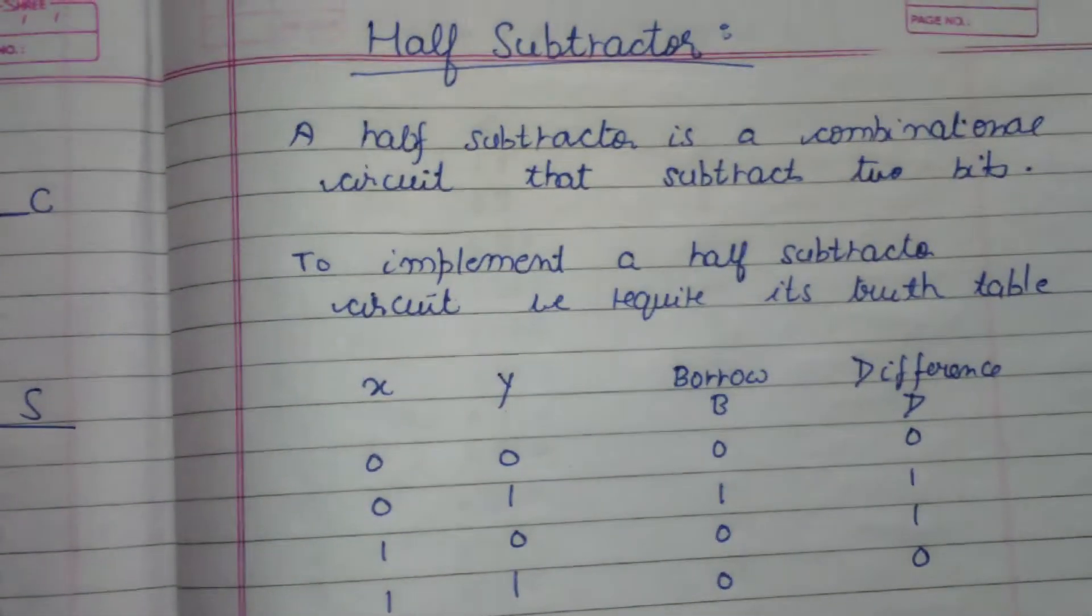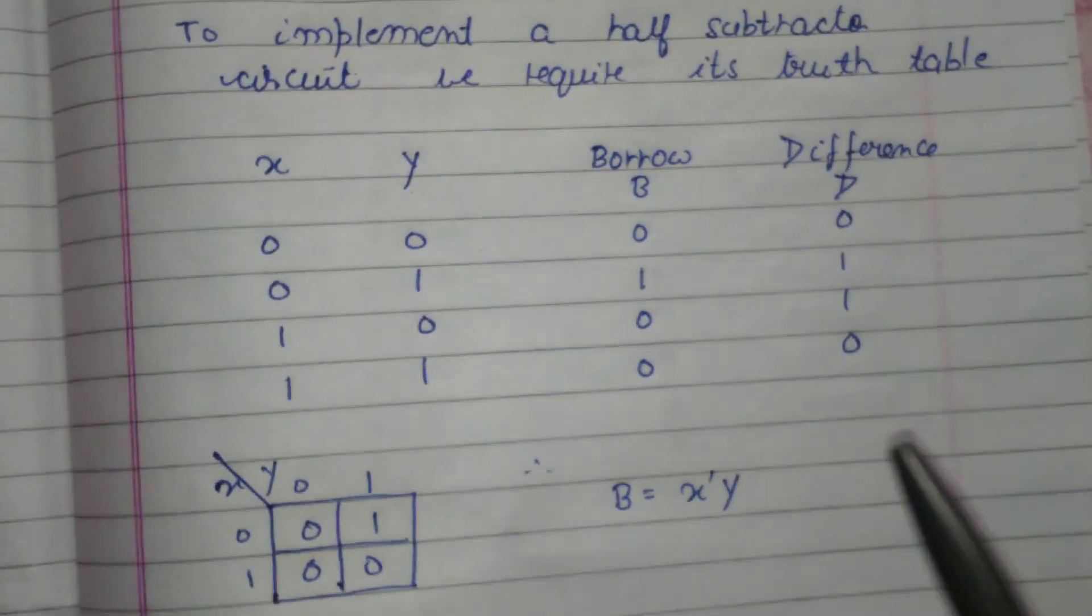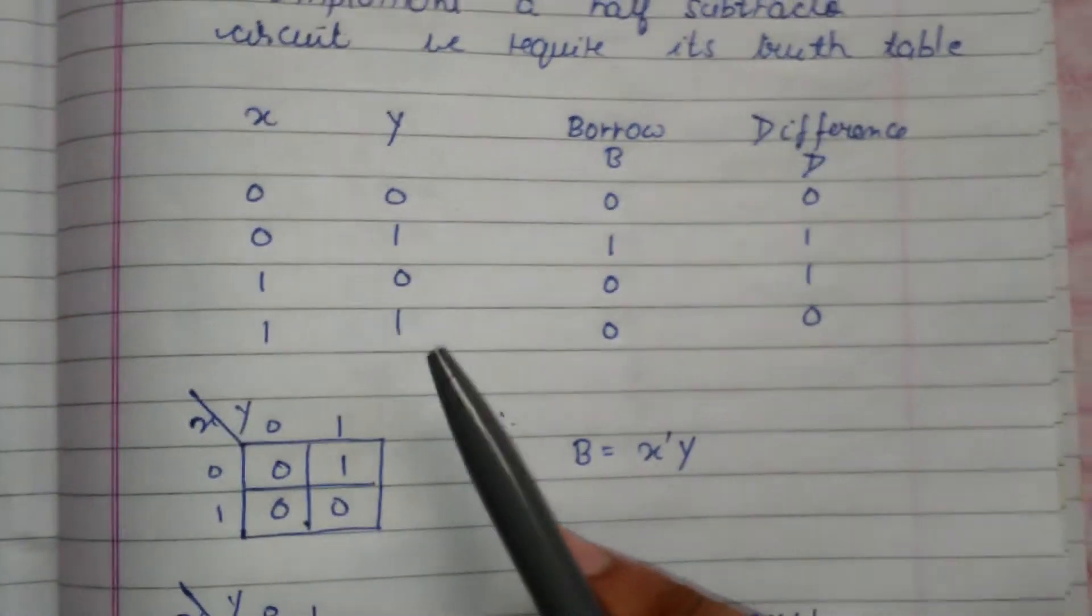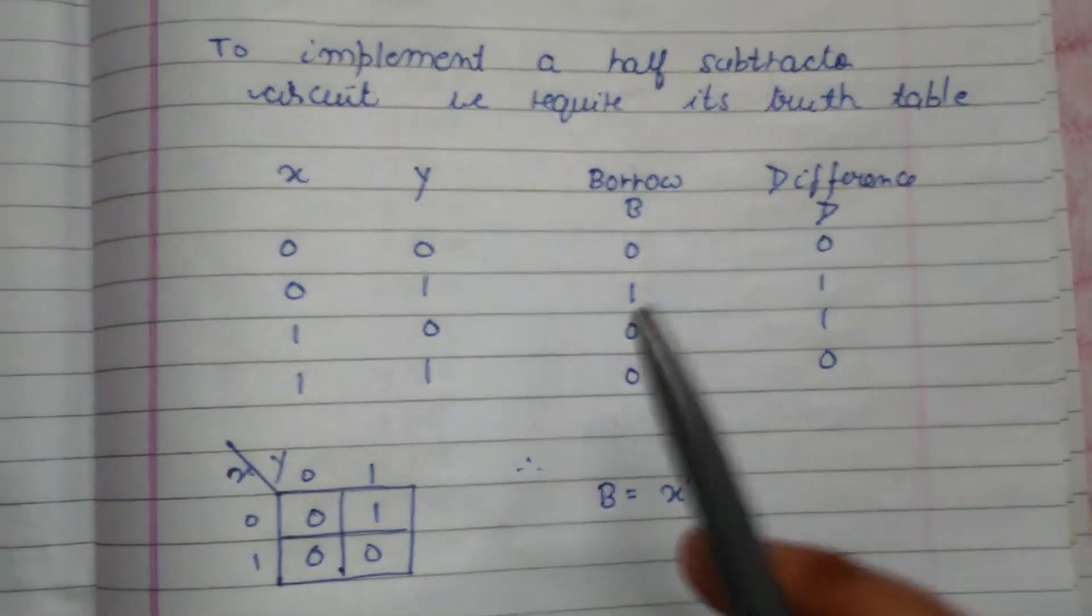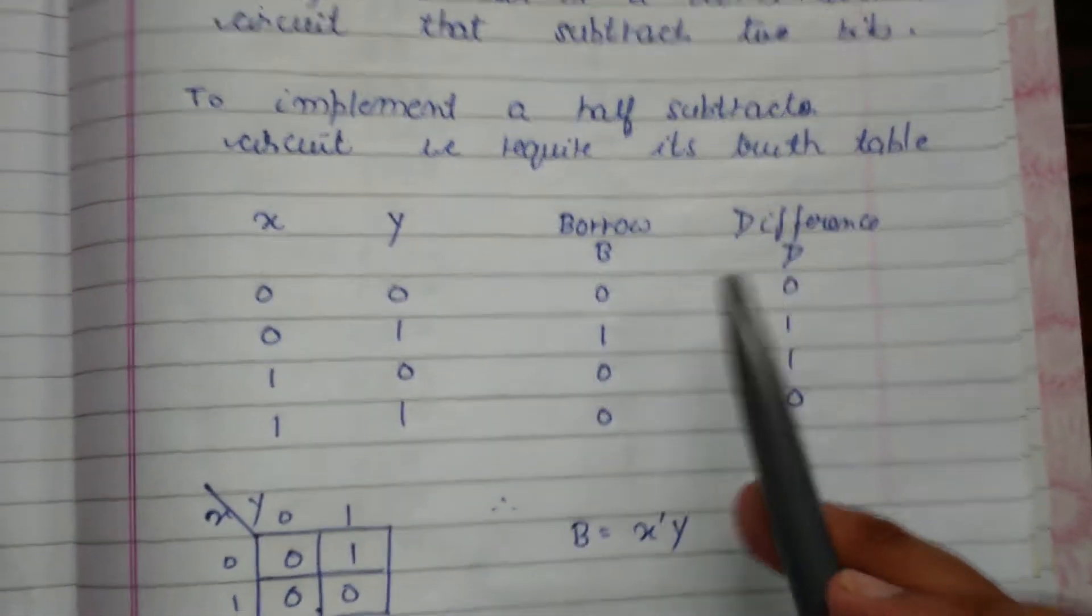Now to implement a half subtractor circuit, we should know its truth table. To implement any circuit we should know its truth table. Here I have made a truth table of a half subtractor circuit. It has two inputs X and Y, and two outputs: borrow and difference, where borrow is the MSB and difference is the LSB.